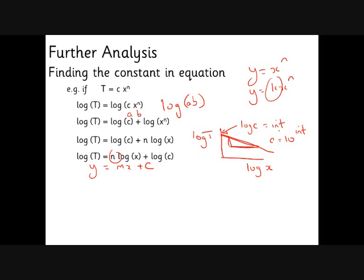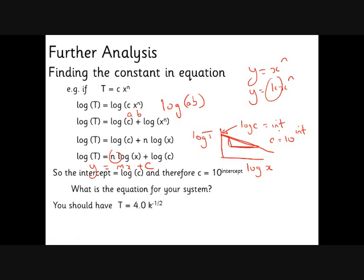So what we're going to do, what we did in this experiment in this lesson, is we tried out some data and we got some values. What you should have got for your system is T equals 4 times k to the half. This has just come from the constant k to the half because we know the equation for the mass-spring system is 2 pi root m over k. So this has given us a graph with a gradient of minus a half and an intercept of log 4.